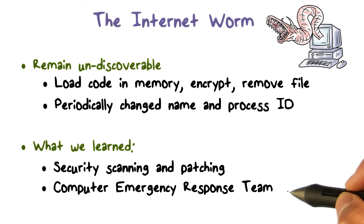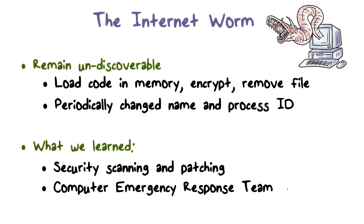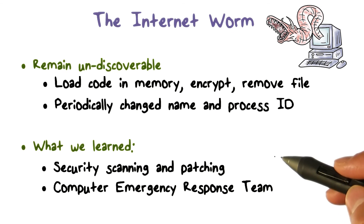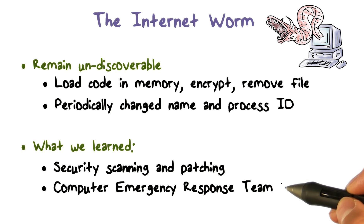The second lesson is that we need to have a fast and coordinated response to a major security incident such as the internet worm. Because of the internet worm, the US government established the Computer Emergency Response Team, or CERT for short. Nowadays, CERT is usually responsible for issuing alerts about security flaws and recommendations about patches.